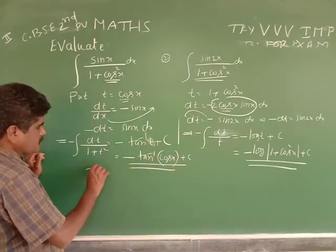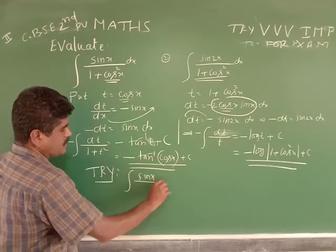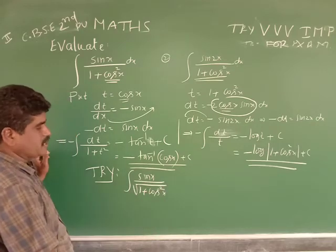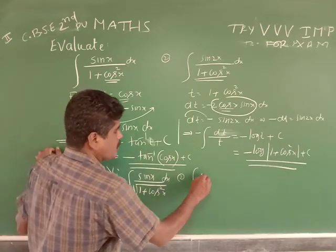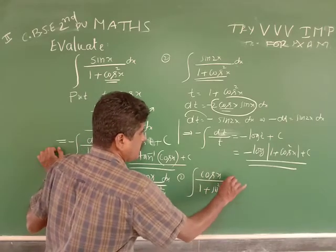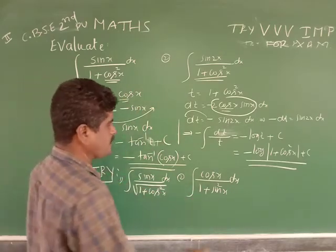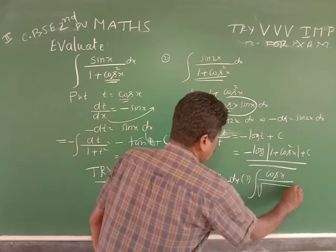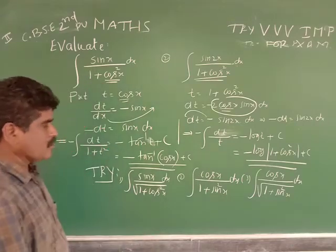Now try these problems yourself. First: integration of sin(x) divided by the square root of 1 plus cos²(x) dx. Second: integration of cos(x) divided by 1 plus sin²(x) dx — hint: put t equal to sin(x). Third: integration of cos(x) divided by the square root of 1 plus sin²(x) dx.